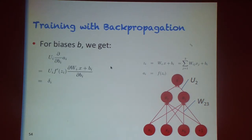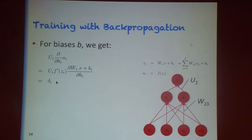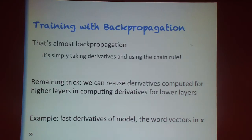For the bias variables, it's essentially the same story. If you think of the bias variable as equivalent to having an always-on plus-one unit, you get exactly what you'd expect because x is always one, so its derivative is just the same delta_i quantity. That's almost all that happens for backpropagation — it's simply going through and working out the derivatives using the chain rule.